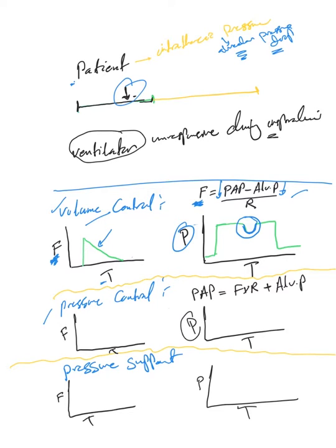The target is the pressure—the proximal airway pressure—so it has to remain constant. So this drop in alveolar pressure will be compensated by increasing the flow.